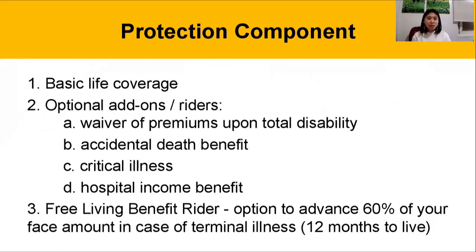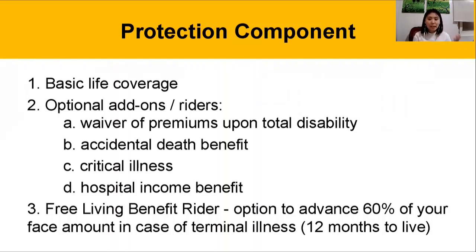Usually, you get the basic life coverage — that's your life insurance — and you can also enjoy optional add-ons or riders, just like in a VUL plan. You can enjoy waiver of premiums in case of total disability, accidental death benefit for additional protection for the family, and critical illness and hospital income benefit for the health protection aspect of the plan.